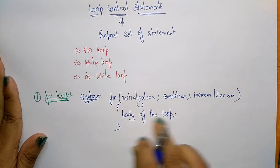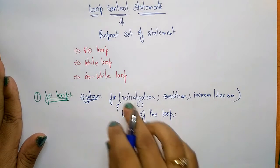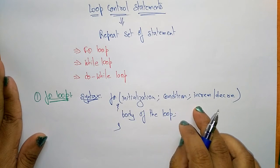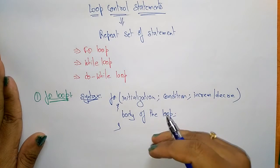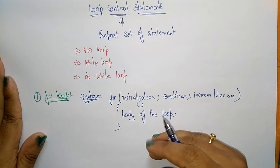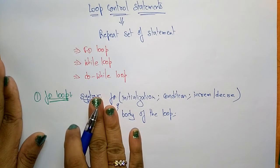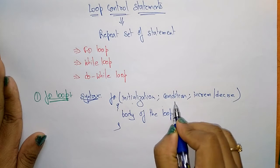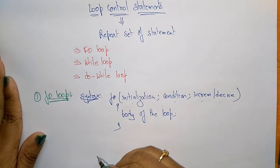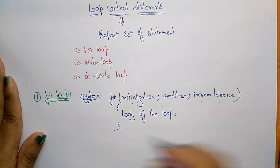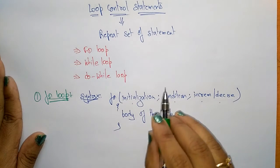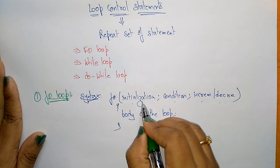Within the body of the loop, it executes the repeated set of statements until this condition is satisfied. This is the syntax for the for loop. The for loop has three parts: initialization, condition, and increment or decrement.